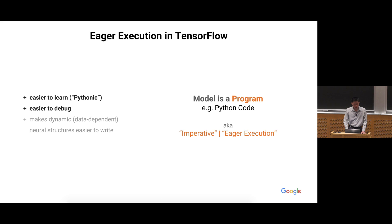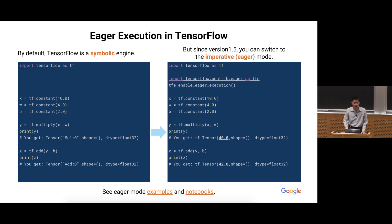With eager execution, your program can be more Pythonic and is easier to learn and read. Here's an example: on the left you're seeing the same code as before using default symbolic execution. To switch to eager execution, you just add two lines — import the eager module and call enable_eager_execution. You don't have to make any other change. Because of these two lines, the semantics of multiply and add change: instead of building a graph, this line is actually doing the multiplication of 10 and 4. If you print y you will see the value, and likewise for z — everything is flatter and easier to understand.